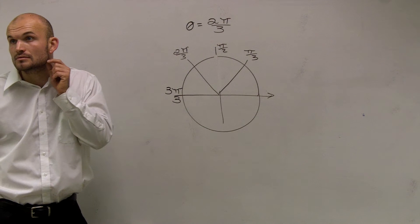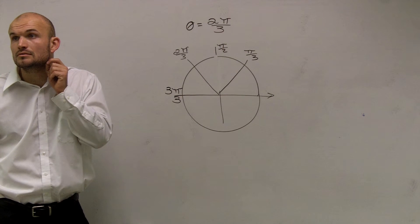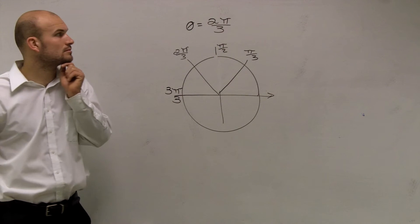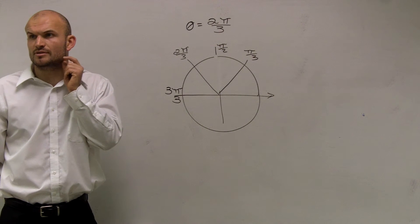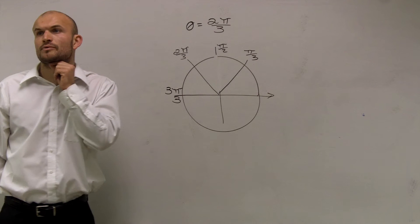Student asks about the problem. Teacher clarifies: It's 2π over 3. The student notes that problem 31 is secant of 40. Teacher responds: I'm doing 41.